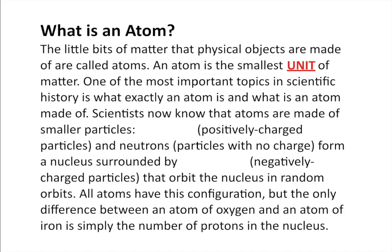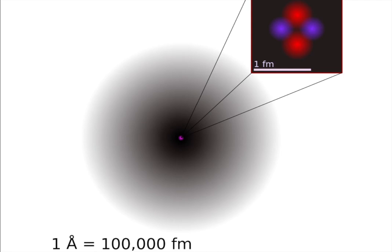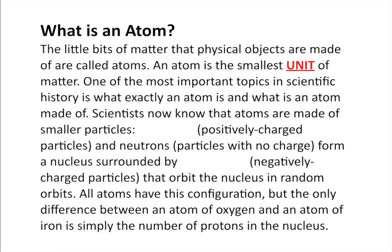One of the most important topics in scientific history was what an atom was and what it was made of. We went from little marbles to what we have today, called the electron cloud model. This is a model of a helium atom. We have red little balls, purple little balls, and a cloud kind of thing. Scientists now know atoms are made of smaller particles. The red spheres are positively charged particles called protons, and neutrons are particles with no charge — those are the purple ones.